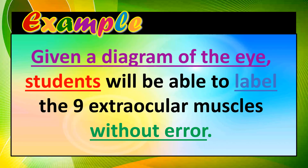As an application of what we have learned on the ABCD method in writing objectives, here is an example: 'Given a diagram of the eye, students will be able to label the nine extra-ocular muscles without error.' We can underline the four parts. 'Given a diagram of the eye' — this is the condition.